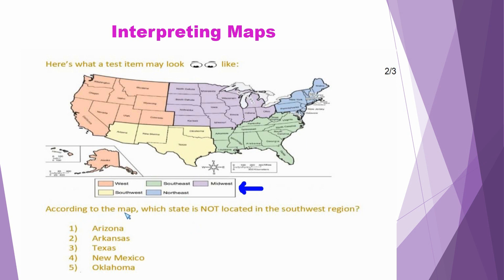So here we have: according to the map, which state is not — and this is going to be a key term — so we're going to underline 'is not' — located in the Southwest region. Now we know that we are looking for the state that is not located in the Southwest region. So we want to go to the Southwest region, which is coded as yellow, to identify which states are located there so we can find the one that is not.